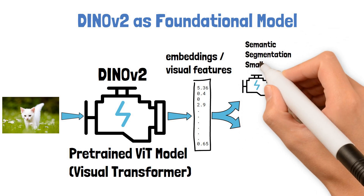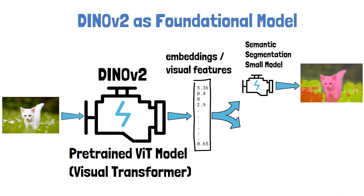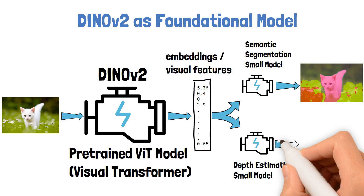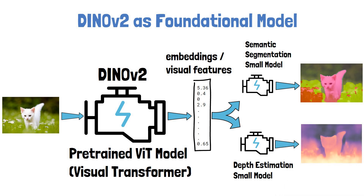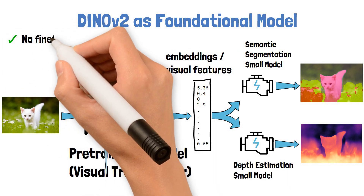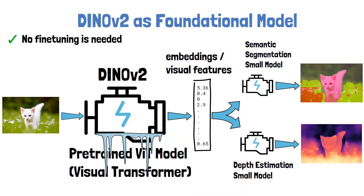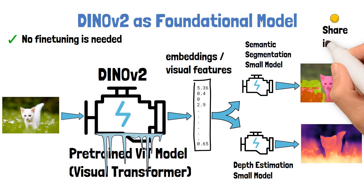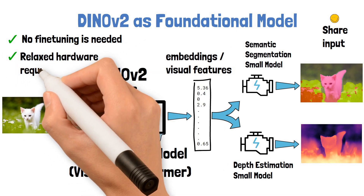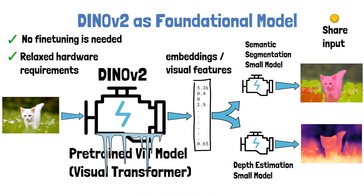For example, we can have one model that will handle semantic segmentation, which means categorizing related parts in the image, and one model to estimate the depth of objects in the picture. The output examples here are taken from the Meta AI demo for using DynoV2. Another very important attribute is that while training these task-specific models, DynoV2 can be frozen — in other words, no fine-tuning is needed — which further simplifies training. Since DynoV2 can be executed on an image once and the output used by multiple models, unlike a fine-tuned version which would need to be re-run for every task-specific model. Also, fine-tuning such a huge model is not trivial and requires proper hardware that is not accessible to everyone.